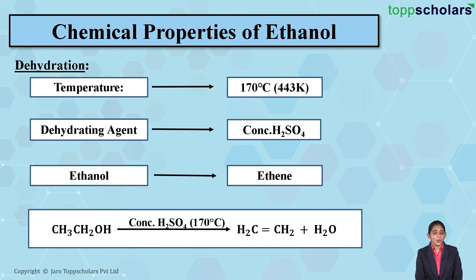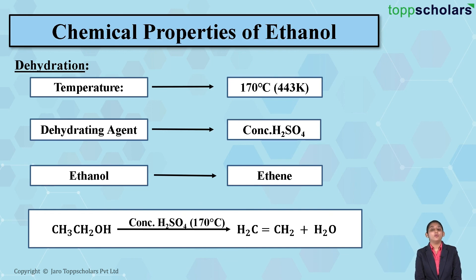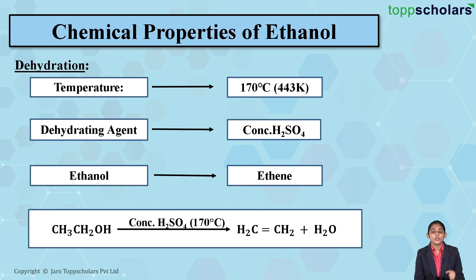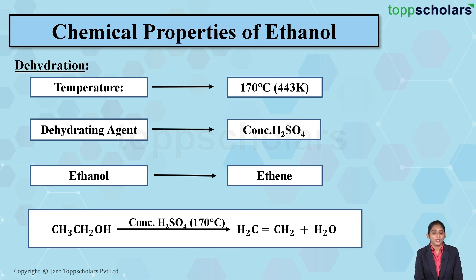As you can see, when ethanol is treated with concentrated sulfuric acid at a temperature of about 170 degrees Celsius, ethanol gets converted into the unsaturated compound ethene due to the removal of a water molecule. This is the dehydration reaction — ethanol on heating with concentrated sulfuric acid at 170 degrees Celsius gives ethene, which is an unsaturated compound.